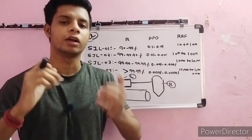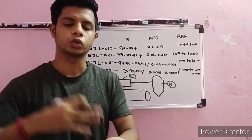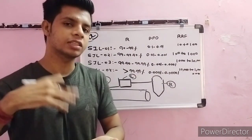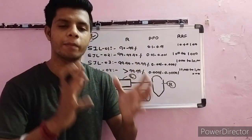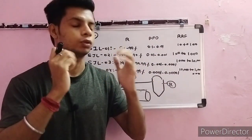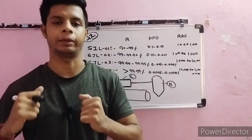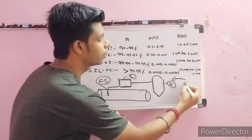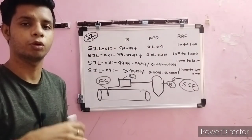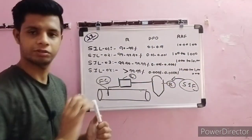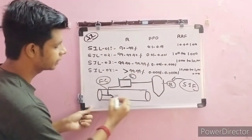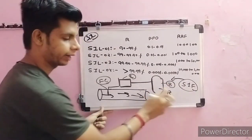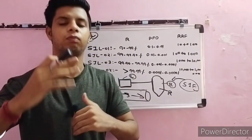To reduce risk, we put control measures in place. In functional safety, that control measure is called a Safety Instrumented Function. A safety instrumented function is the combination of a sensor, logic solver, and final control element. Let's look at a diagram to understand SIF. SIL is actually the level of protection provided by a SIF.